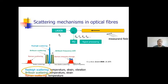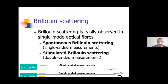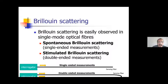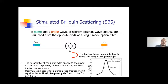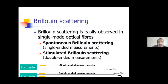I will start with the Brillouin scattering. The Brillouin scattering can be quite easily observed in single-mode optical fibers. In particular, we may have two different configurations: a configuration where the fiber is illuminated only from one side — these are sensors based on spontaneous Brillouin scattering — and then sensors based on stimulated Brillouin scattering, where the light is launched from both sides of the fiber. The spontaneous Brillouin scattering-based sensors are advantageous because they require light launching from only one end, but stimulated Brillouin scattering is a much stronger phenomenon.